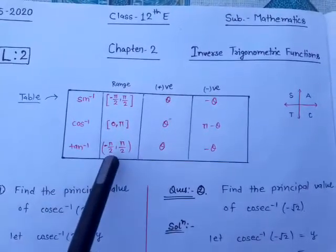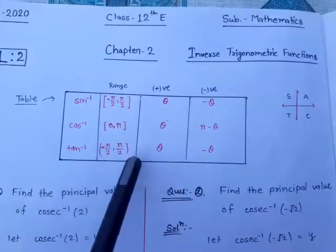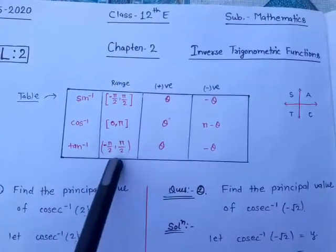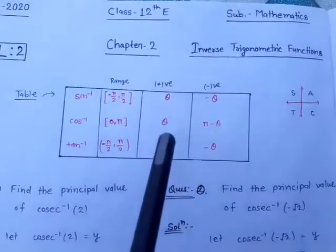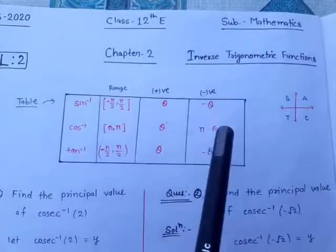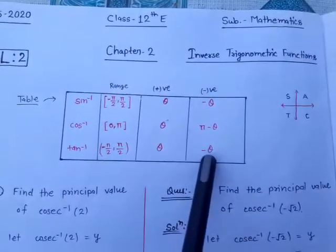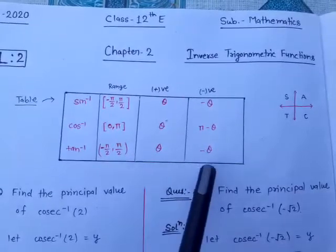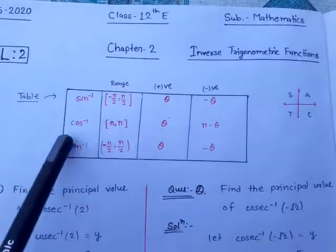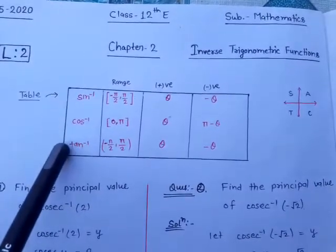For tan inverse the range is (−π/2, π/2) in open interval. In the positive case theta remains the same, and in the negative case it becomes minus theta. We discussed these three terms in the table.